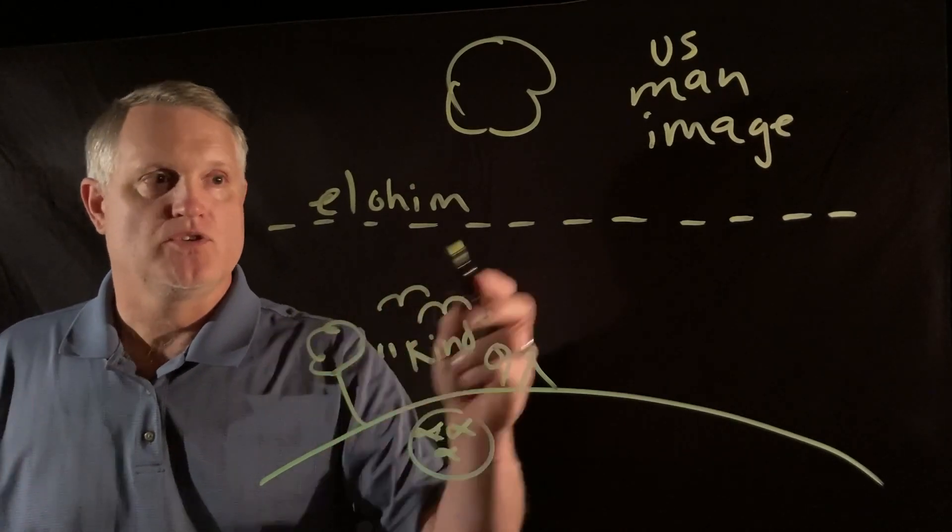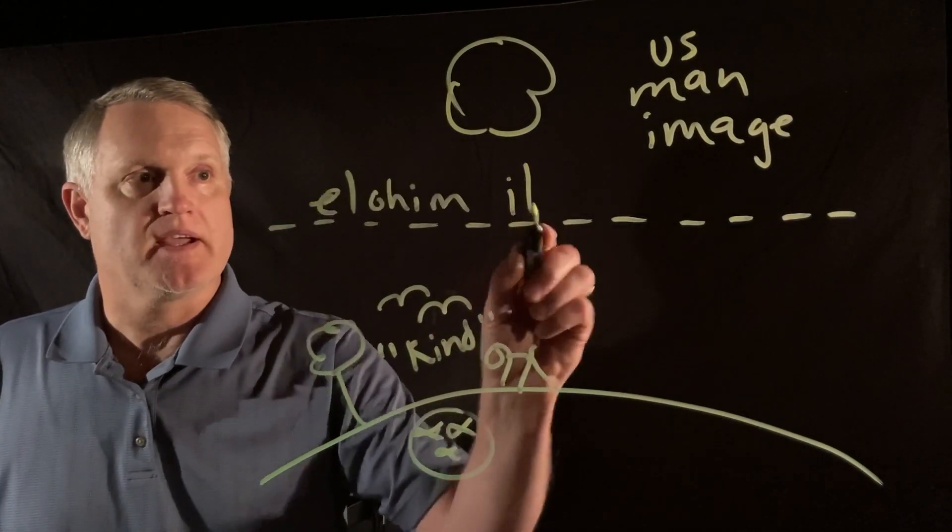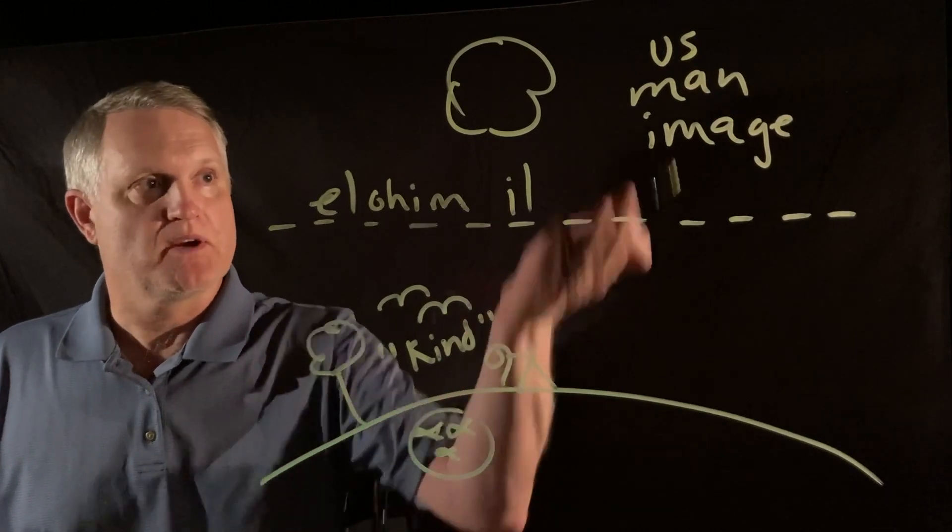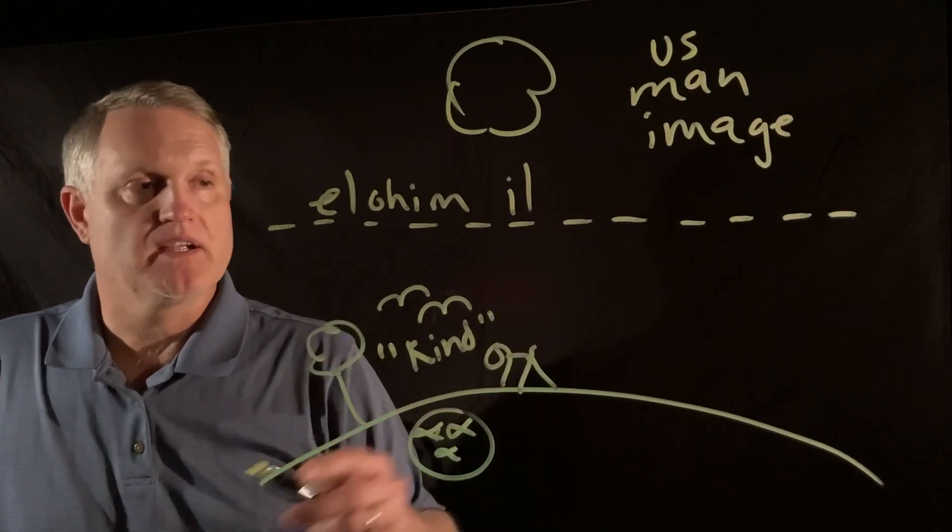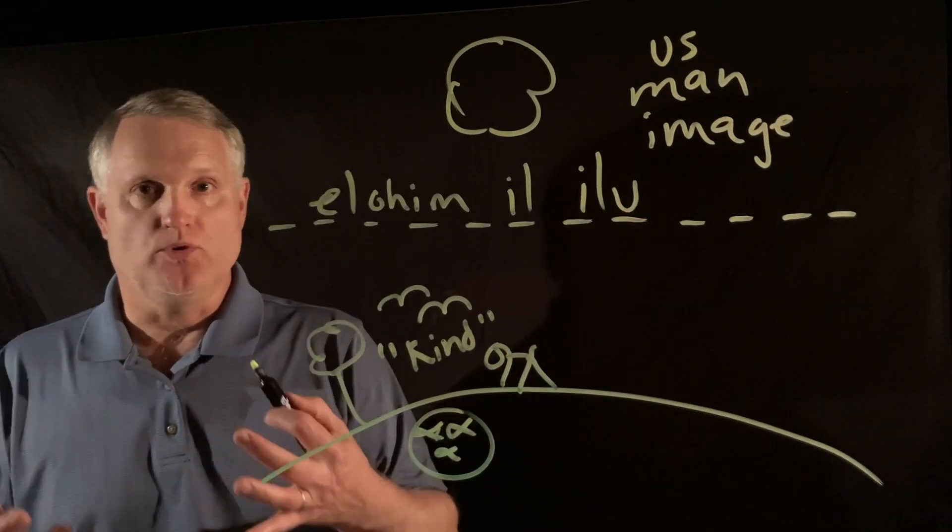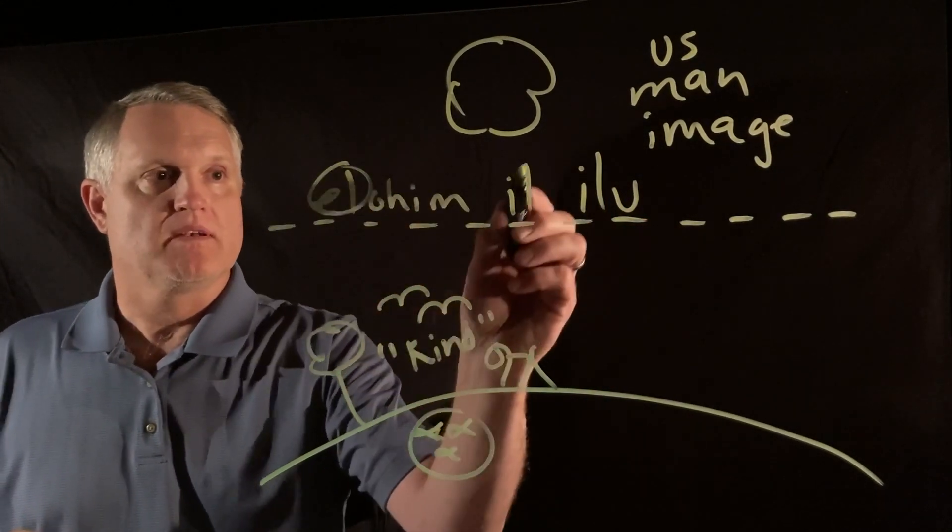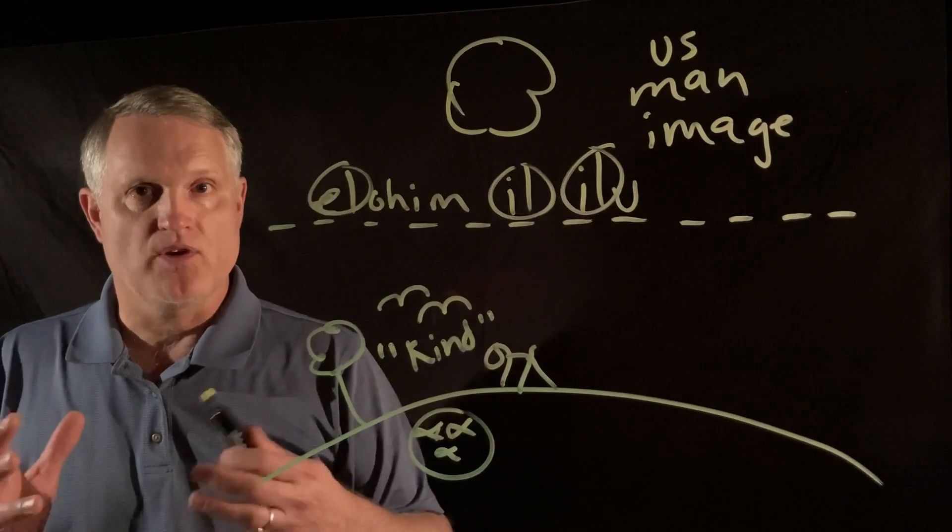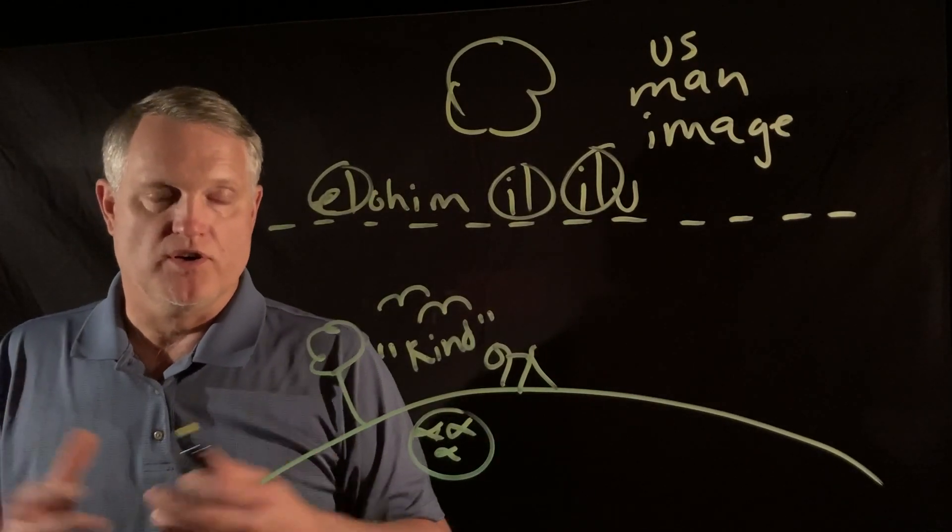Very, very akin to a neighboring language like Ugaritic would call the spirit world an Il, a spirit. Akkadian would call a spirit being an Ilu. So you see the common language sound among the ancient Near Easterners.